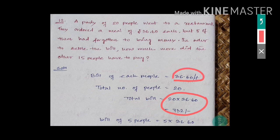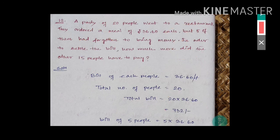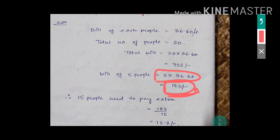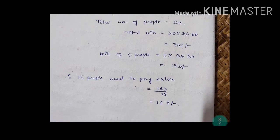The five people who forgot their wallets — their bill has to be paid by the remaining 15 people. First, find the bill of those five people: 5 multiplied by 36.60 equals 183 rupees. This 183 rupees is divided among the 15 remaining people. So divide 183 by 15, which equals 12.20 rupees.